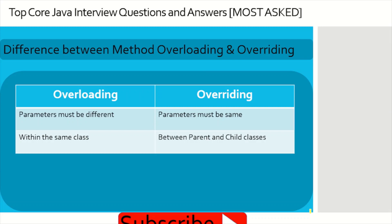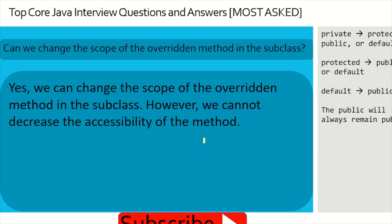Difference between method overloading and method overriding: overloading is a compile-time event; overriding is a runtime activity. For overloading, parameters must be different; for overriding, parameters must be the same. Overloading occurs within the same class, while overriding occurs between a parent and child class.